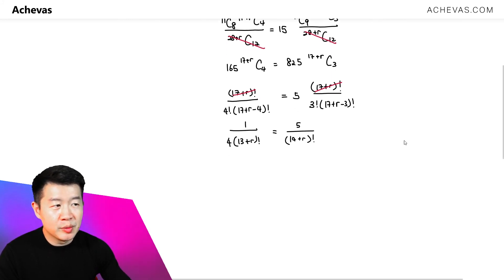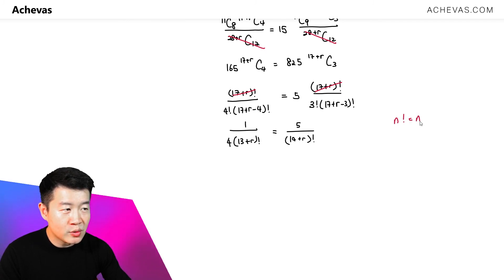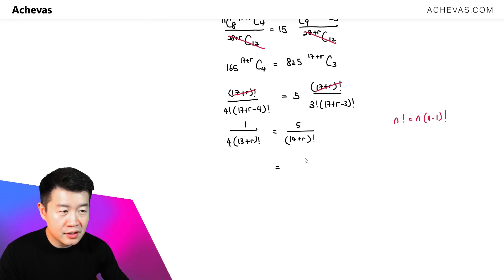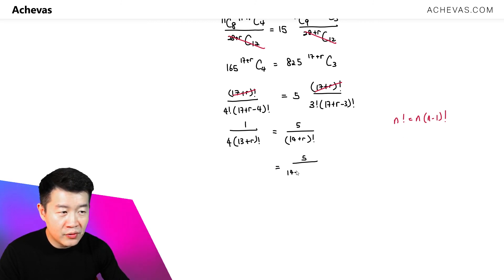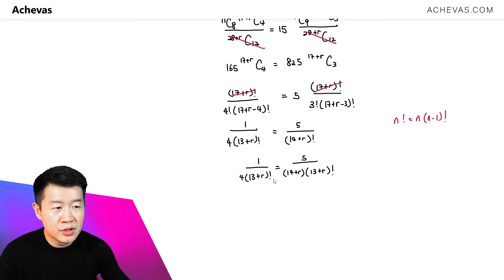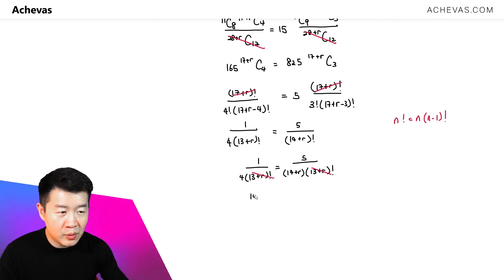For factorial notation, I use the fact that n! = n × (n−1)!. So (14+R)! can be rewritten as (14+R) × (13+R)!. This gives 1 / [4 × (13+R)!] = 5 / [(14+R) × (13+R)!]. The (13+R)! cancels, and cross-multiplying gives 14+R = 20, which gives R = 6.